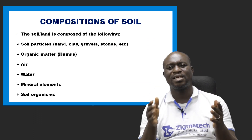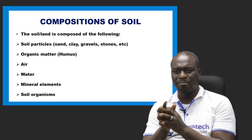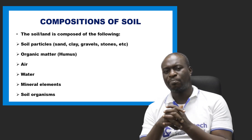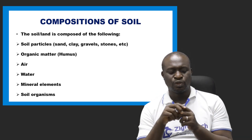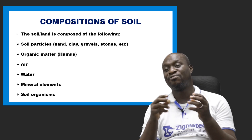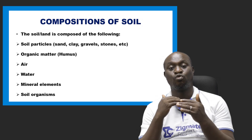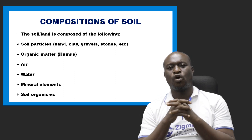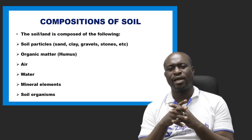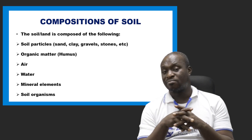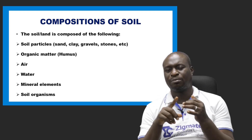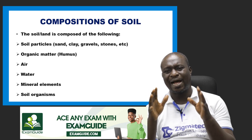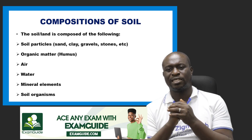Now, what makes up the soil? The soil composition includes, number one, soil particles. Soil particles include things like sand, gravels, stones, and clay. Number two is organic matter, which simply means dead remains of plants as well as animals. Organic matter helps to enrich the soil and brings about the rapid growth of plants. Another name for organic matter is humus.